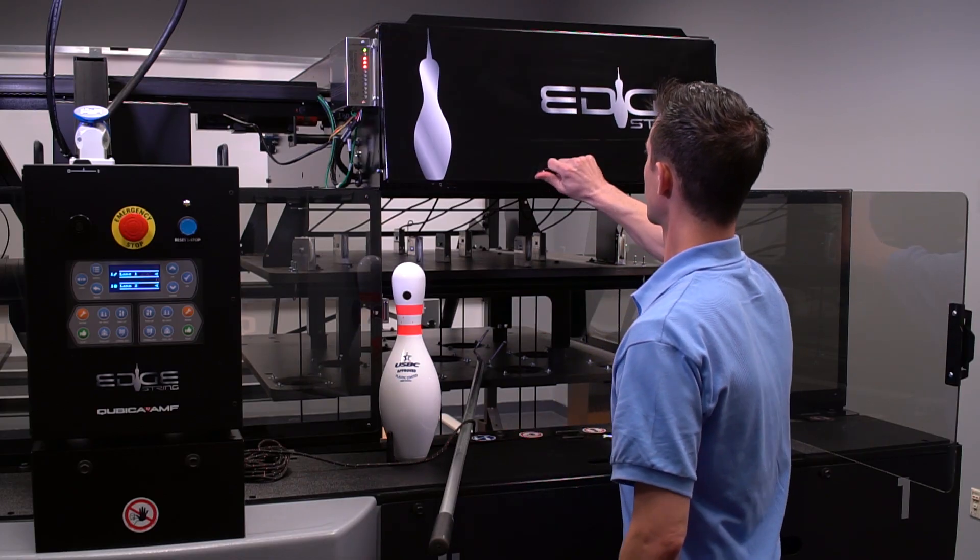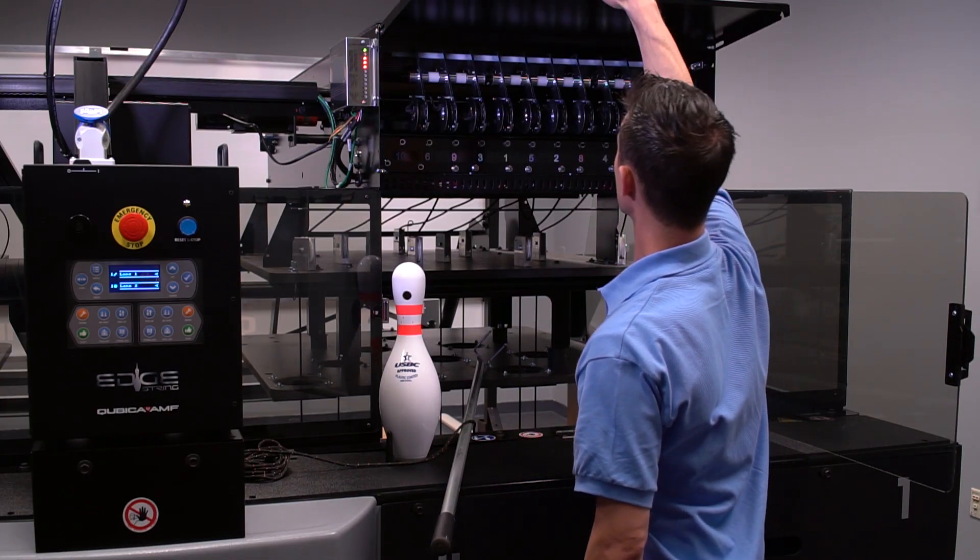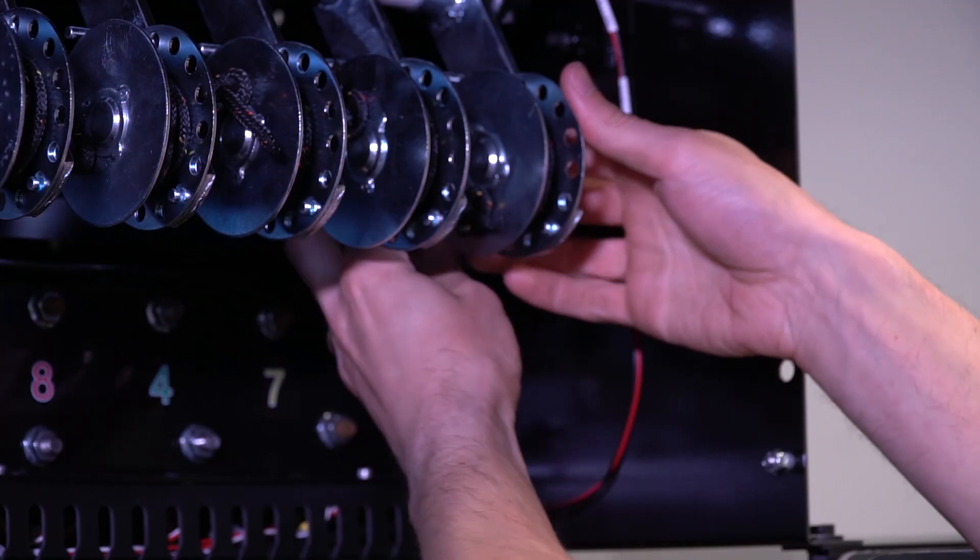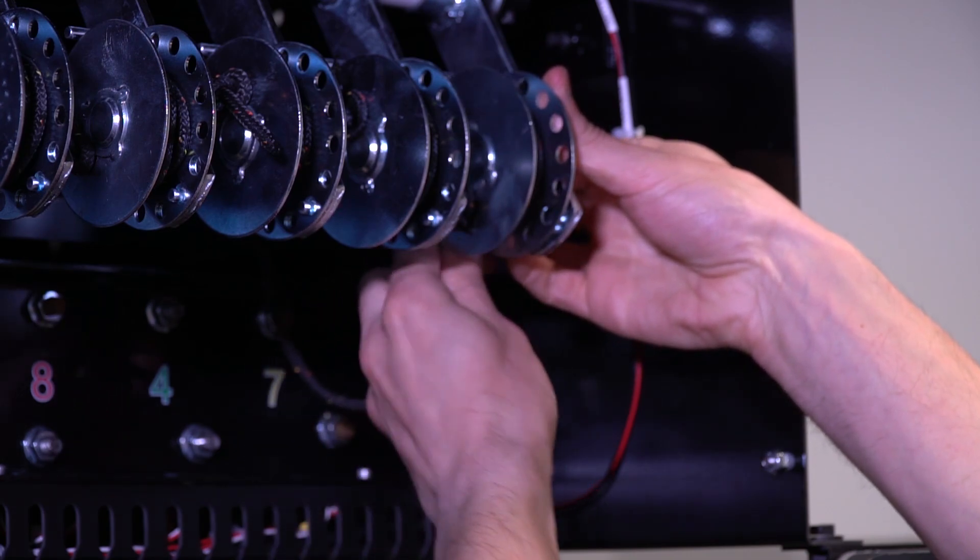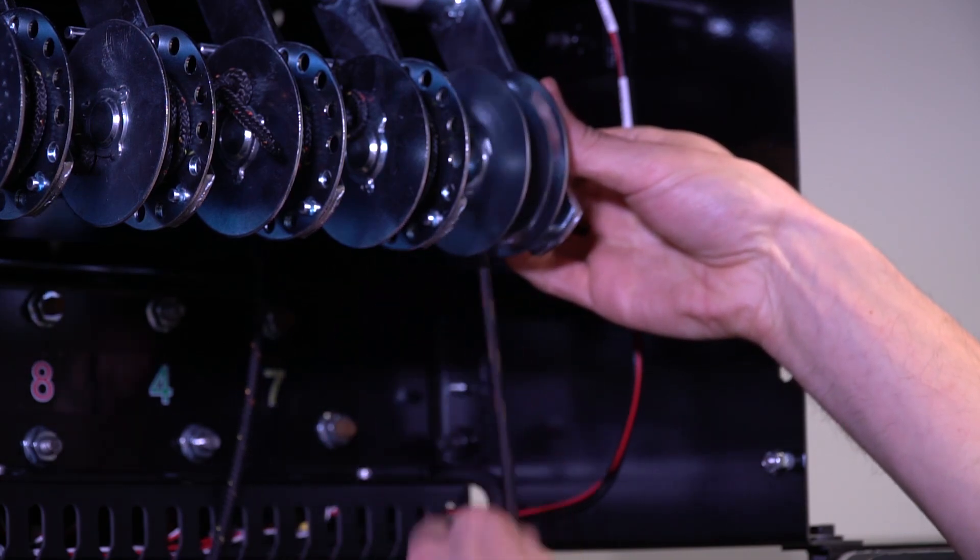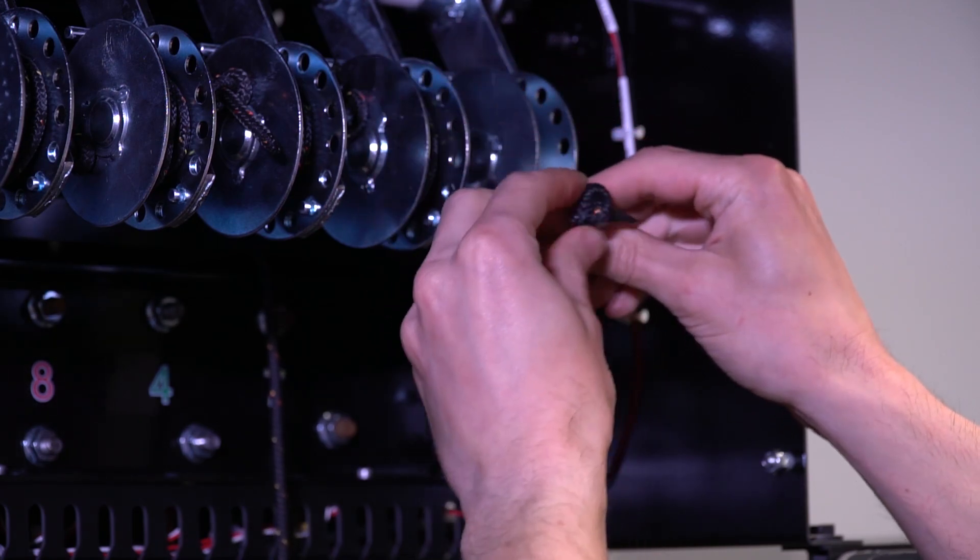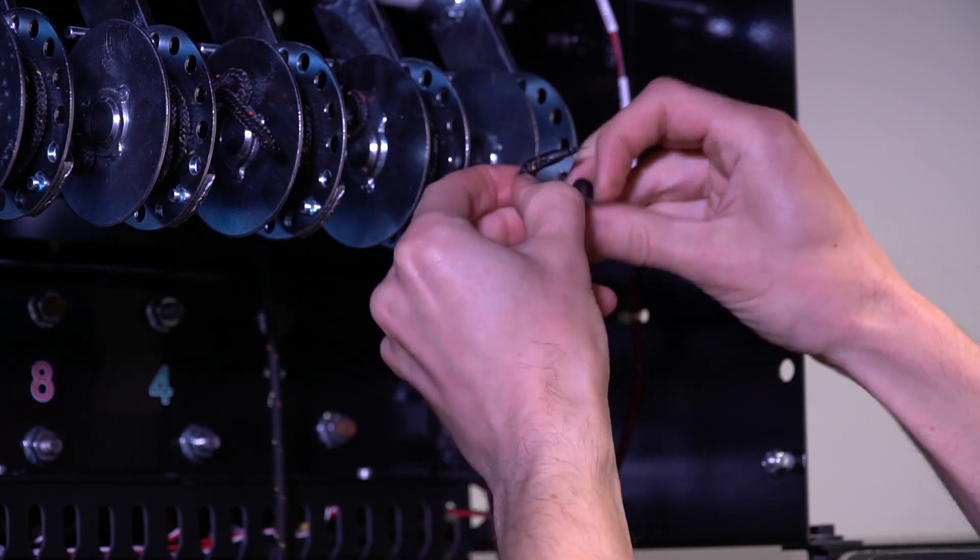Open the reel arm cover. Unwind all string from the reel arm spool. Untie the string knot and remove the string from the reel arm spool.